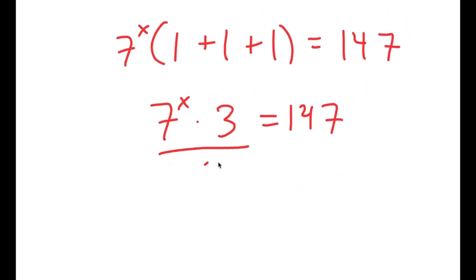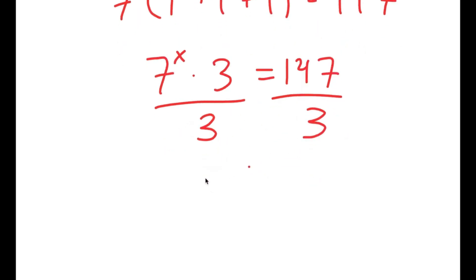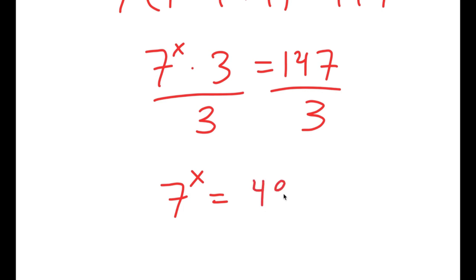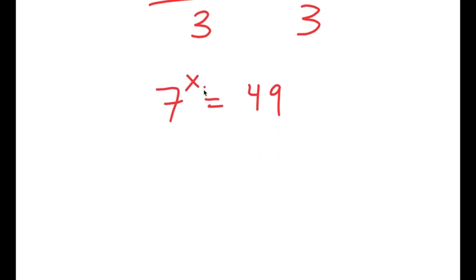Now from here, I'm going to divide both sides by 3. So 7 to the power of x is equal to 147 divided by 3, which equals 49. So I get 7 to the power of x is equal to 49.